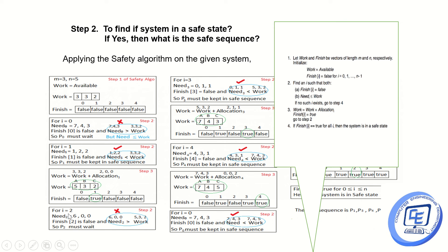Next, for i equals 2: Need of P2 is 6, 0, 0 and Finish[2] is false. Comparing with Work 5, 3, 2 — this is false, so P2 must wait. For i equals 3: Need of P3 is 0, 1, 1 — comparing with Work, this is satisfied, so P3 is next in the safe sequence after P1. Work is recalculated and Finish[3] set to true. For i equals 4: the condition is also satisfied. P4 is added to the sequence after P3. Work becomes 7, 4, 5 and Finish[4] is set to true.